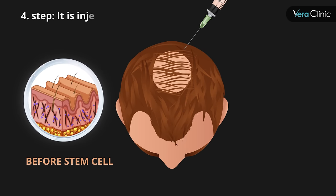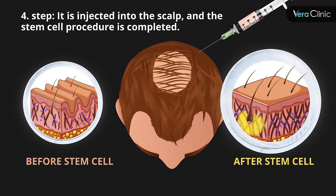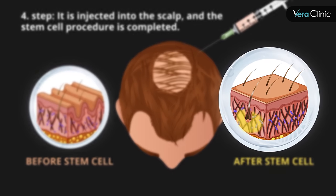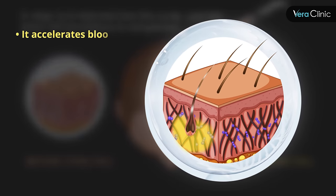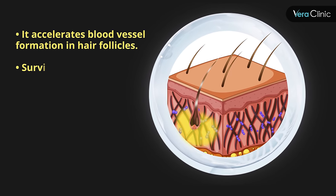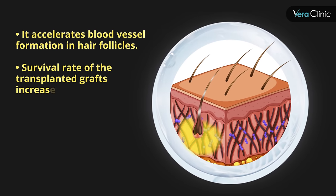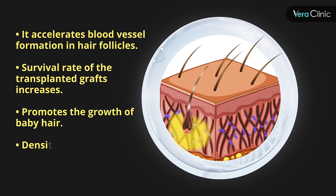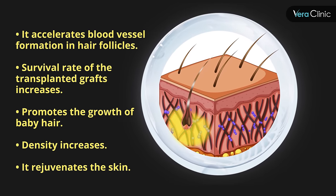Step 4: It is injected into the scalp, and the stem cell procedure is completed. This accelerates blood vessel formation in hair follicles, increases the survival rate of the transplanted grafts, promotes the growth of baby hair, increases density, and rejuvenates the skin.